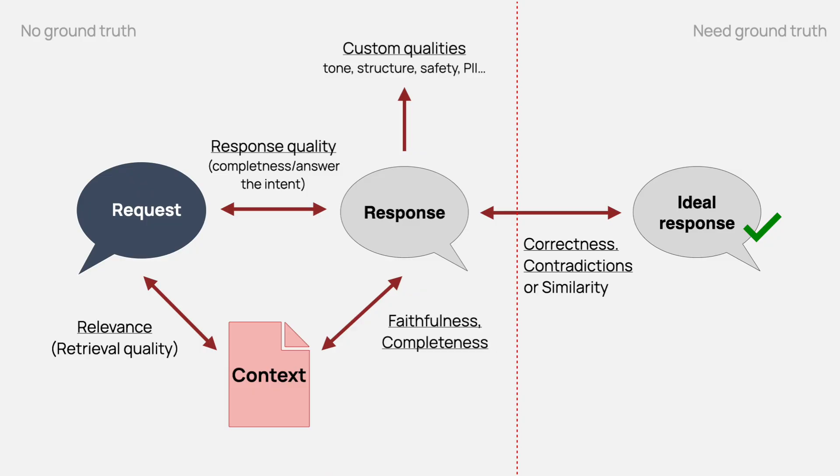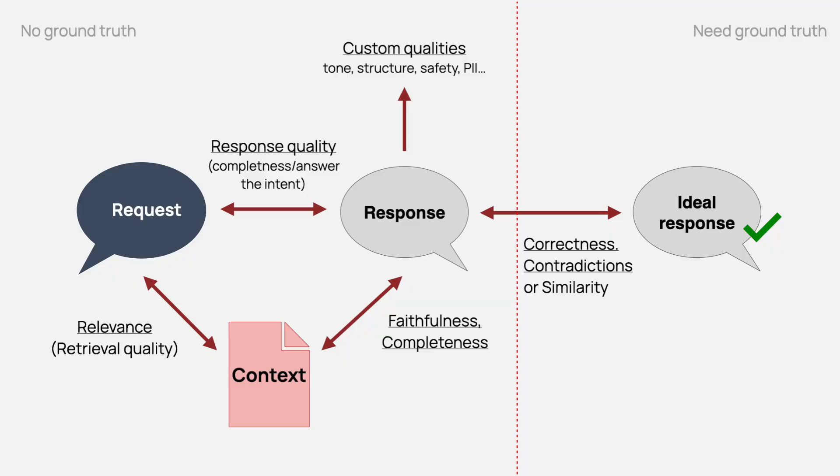If we put it all together, here's what we get. To evaluate a RAG system, you can look at both retrieval and generation quality and evaluate them separately if it makes sense. In both cases, you can evaluate against ground truth, or use LLM judges and other proxy metrics to evaluate faithfulness, contradictions, donor response, and so on. So now we've covered some theory — let's take a look at how you can apply this in practice in the following tutorial.